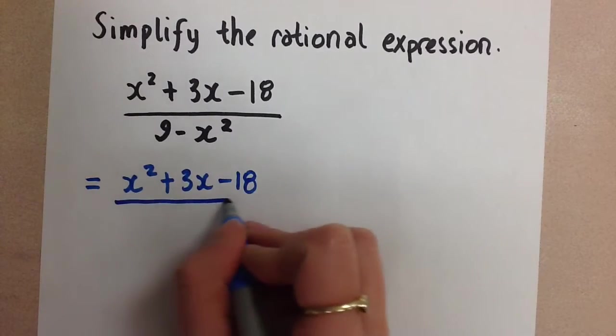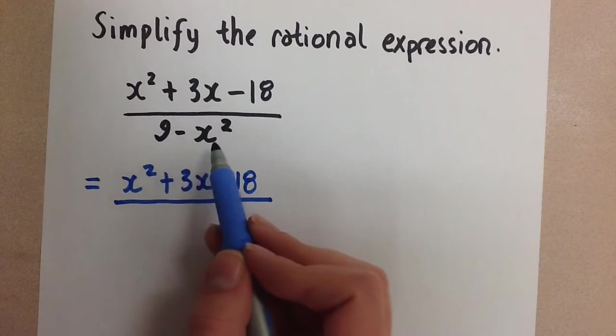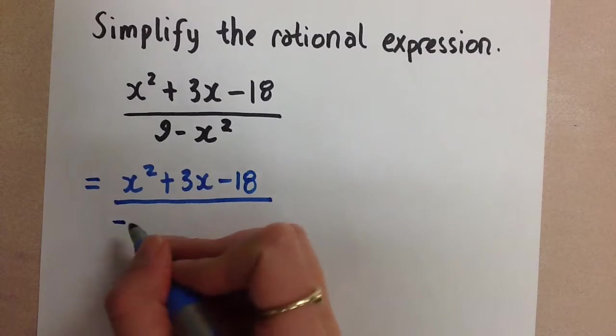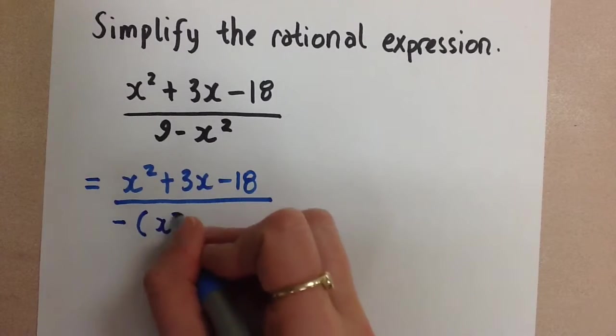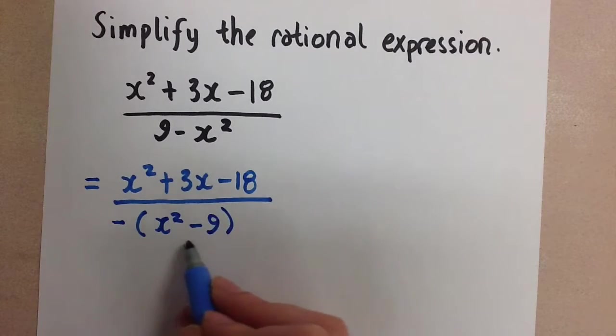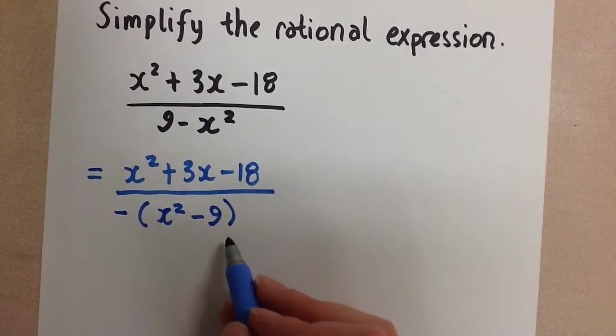So I'll keep the numerator the same, and in the denominator I'm going to change this 9 minus x squared to x squared minus 9 by pulling a negative out of both of those terms. So that'll give me a positive x squared and then a minus 9. And now this is something that you're used to seeing as a difference of squares. So we'll factor that that way.